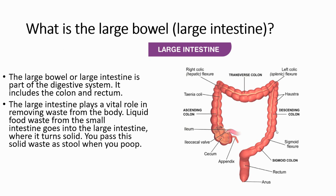What is the large bowel? The large bowel, or large intestine, is part of the digestive system. It includes the colon and rectum. The large intestine plays a vital role in removing waste from the body. Liquid food waste from the small intestine goes into the large intestine, where it turns solid, and we pass this solid waste as stool when we defecate.